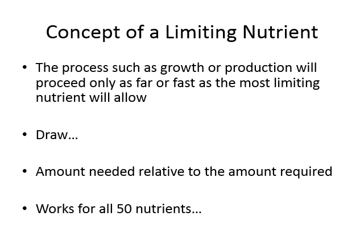We have the concept of the limiting nutrient. Processes such as growth or production will proceed only as far or as fast as the most limiting nutrient will allow. It's usually a relative amount — if I need 2 grams and I only have 1, I'm at 50% of my requirement. If I need 10 pounds and only have 7, that is not my limiting nutrient at 70%. The lowest percentage compared to what I need is the limiting nutrient, and this works for all 50 nutrients.